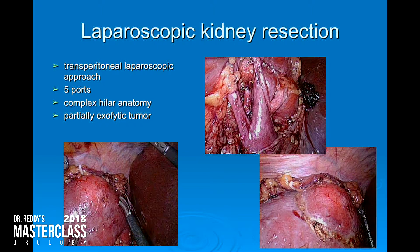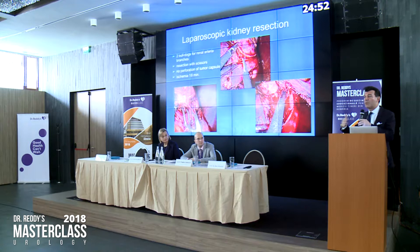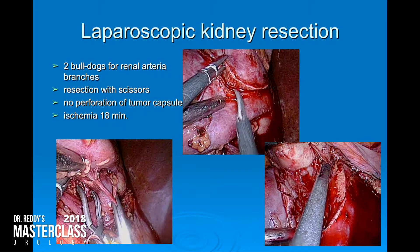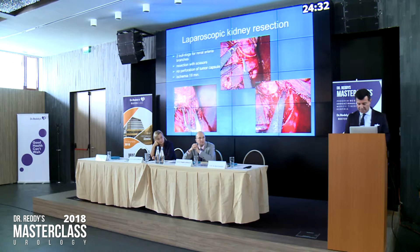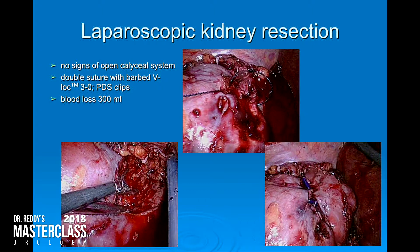We used bulldog clamps on the artery only — we never clamp the vein. We clamped the artery, did the resection of the tumor, no perforation was seen, and ischemia time was roughly 20 minutes. No signs of any caliceal problems. We sutured it with double sutures and blood loss was 300 ml, so everything was okay.